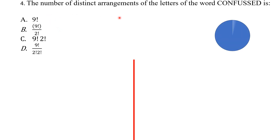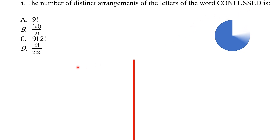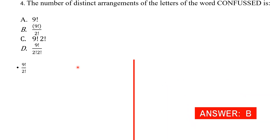The number of distinct arrangements of the letters of the word CONFUSED: counting the letters gives nine total, but two are repeating. So the number of arrangements is 9! / 2!, and our answer is B.